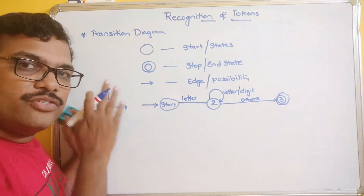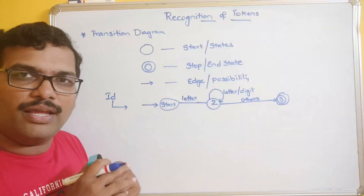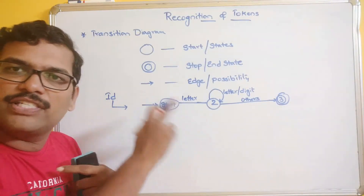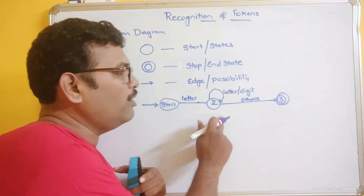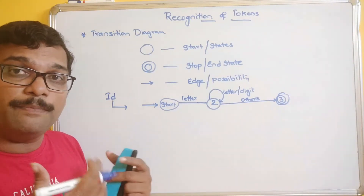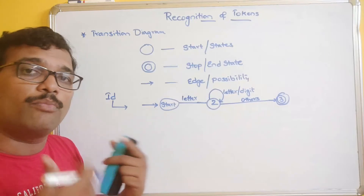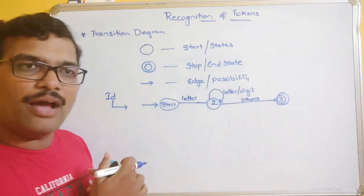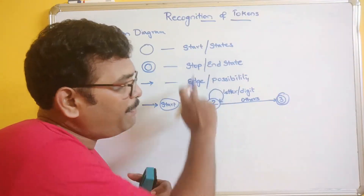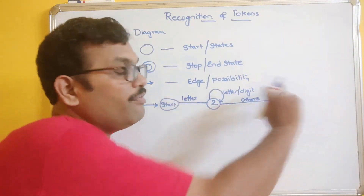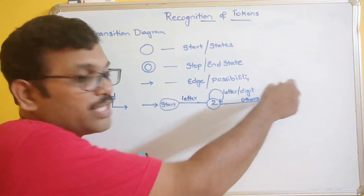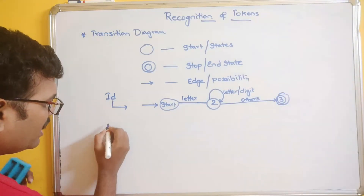Because an identifier should start with only a letter, that first transition is compulsory for a letter. Followed by that, it may be a combination of alphanumeric characters — any number of letters or digits — which is why we give a self-loop. Finally, it moves to the third state, which is the final state, represented by a double circle.